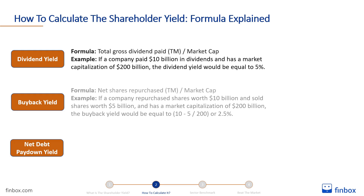The buyback yield is equal to net shares repurchased by a company over the trailing 12-month period divided by the company's market capitalisation. If a company repurchased shares worth $10 billion and sold shares worth $5 billion and has a market capitalisation of $200 billion, the buyback yield would be equal to 10 minus 5 divided by 200, or 2.5%.